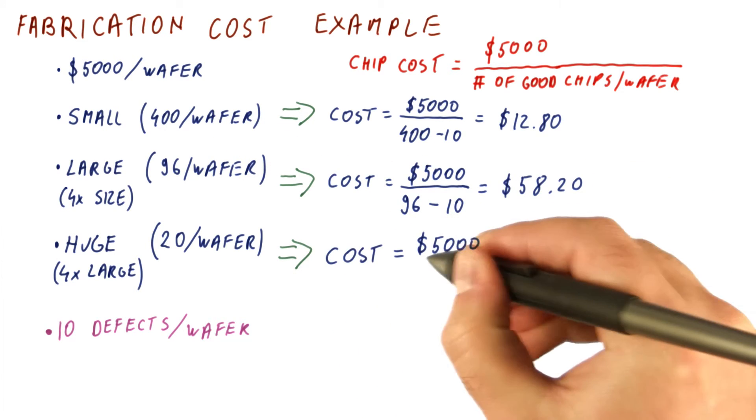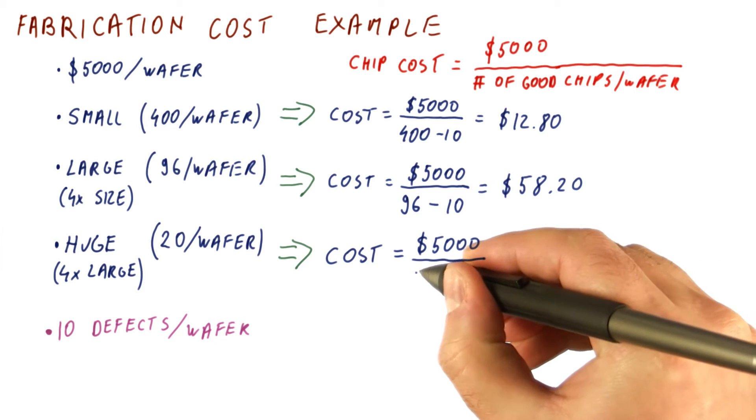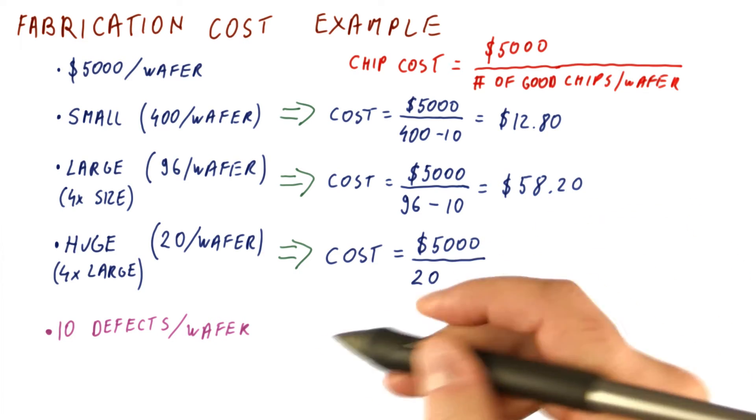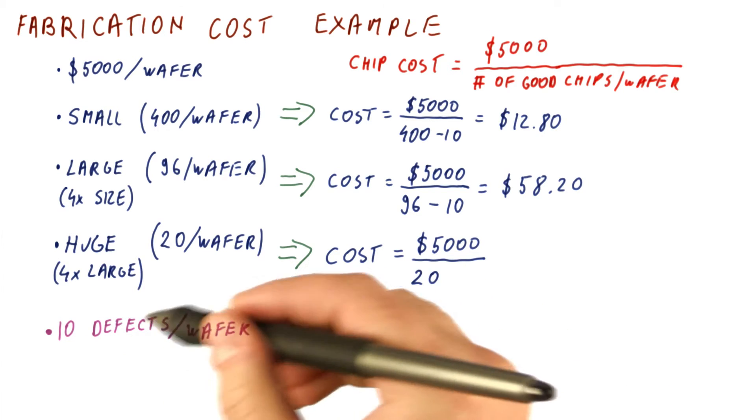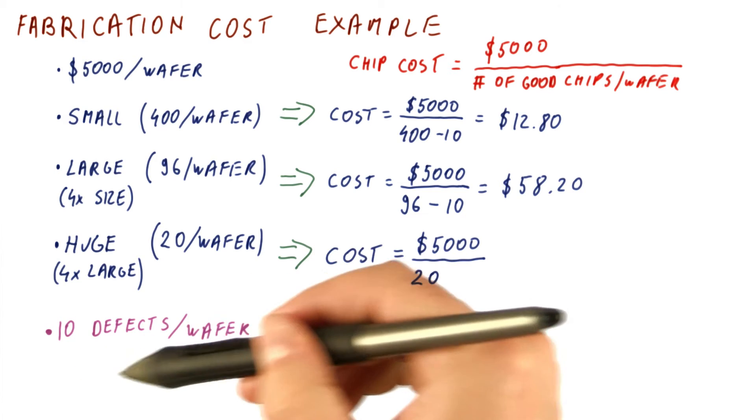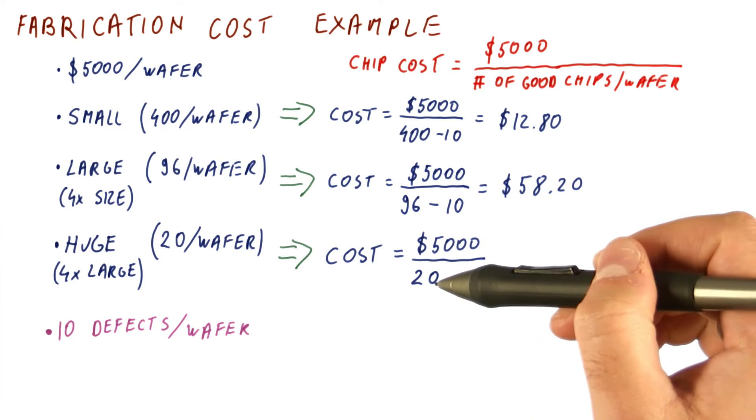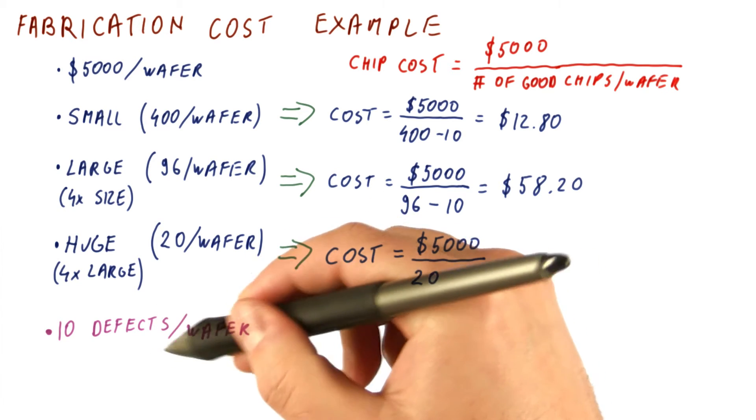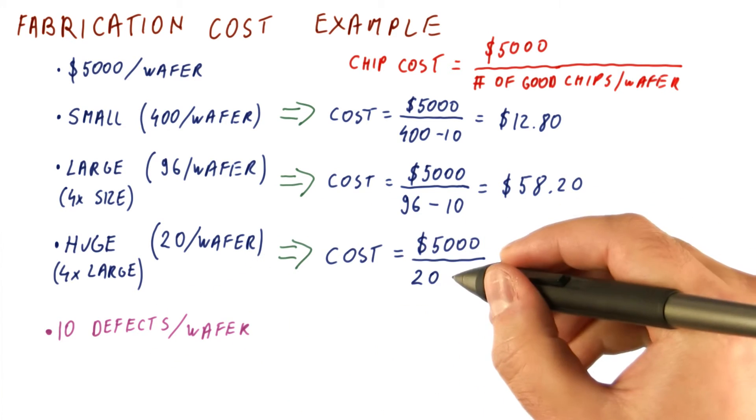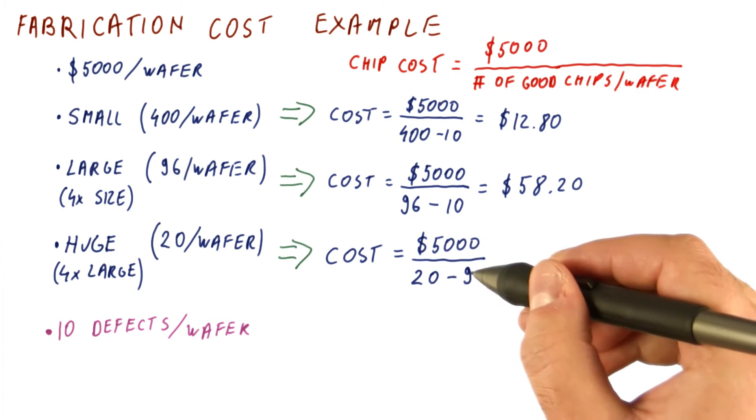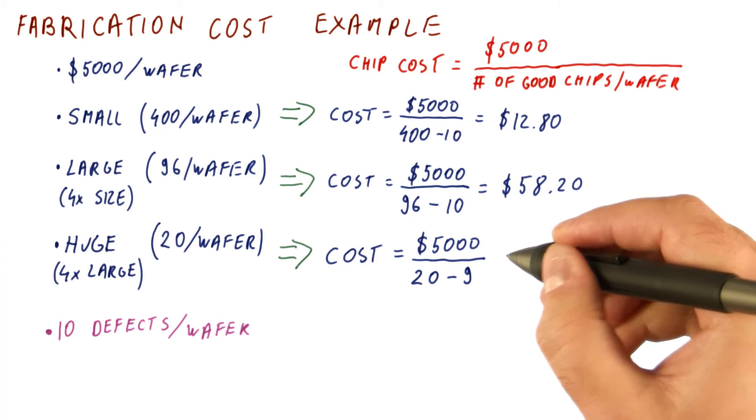And finally for our huge chip, the cost is going to be $5,000. We get only 20 chips fabricated, and now there are 10 defects on a wafer, but with chips this big it seems likely that maybe two of these defects are going to end up on the same chip. So instead of losing 10 chips to defects, let's say that we only lose nine chips, so we pay $5,000 and manufacture only 11 chips that work.